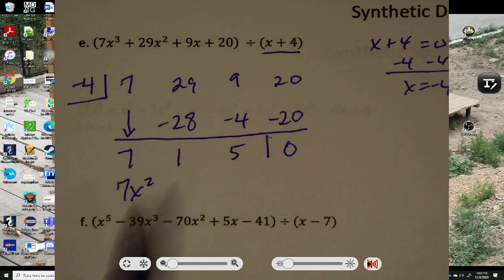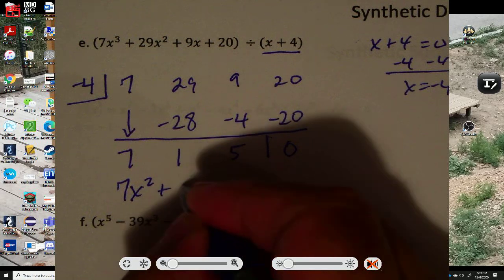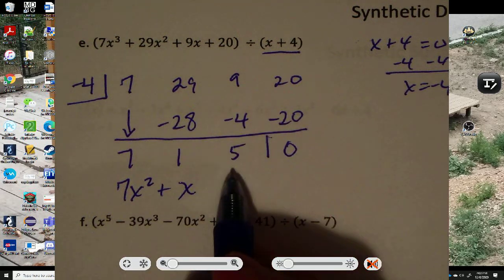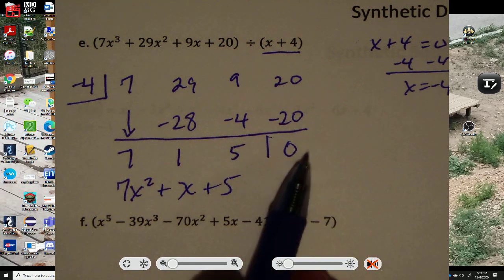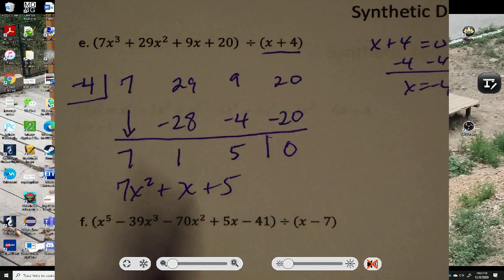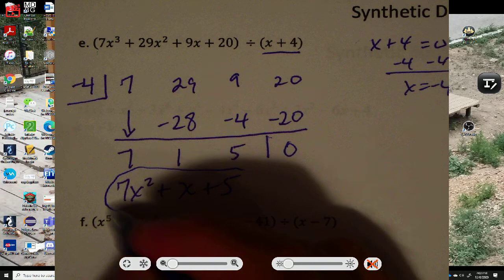So that's going to be plus 1x, or just x. And the next one should have no variable at all. So it's plus 5. The little cubbyhole over here is the remainder. So this one has no remainder. So the answer to part E is 7x squared plus x plus 5. That's the answer.